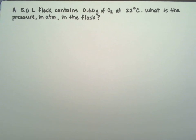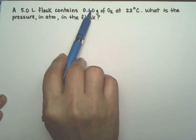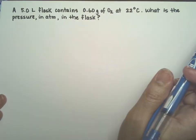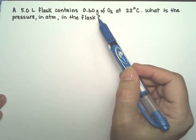For this problem, we have a flask that's a 5-liter flask containing 0.6 grams of oxygen gas at 22 degrees Celsius. What is the pressure, and they want it in atmospheres, in the flask?